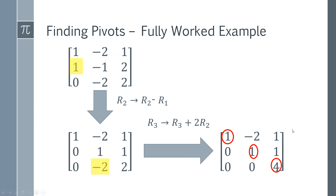So that is how you find your pivots: simply get the matrix into row echelon form, and then it's extremely simple to identify all the first non-zero elements, which are your pivots. The columns they appear in are your pivot columns. Hopefully this video was helpful — if it did help you out, please subscribe, and thank you very much for watching.